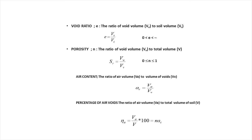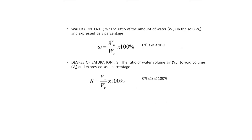Percentage of air voids is the ratio of air volume to total volume of soil. Water content is the ratio and amount of water in the soil expressed as a percentage: water content equals weight of water divided by weight of solids. Degree of saturation is the ratio of volume of water to volume of voids, expressed as a percentage: S = Vw / Vv.